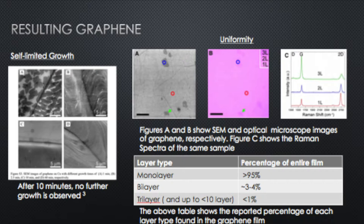After the Lee group synthesized large area graphene films using CVD, they needed to analyze the properties of the film to make sure it was up to standards compared to graphene produced by techniques like exfoliation. They examined the self-limited growth of graphene and what mechanism that implies for how graphene is actually formed. They also assessed the overall uniformity of the graphene film — generally finding that over 95% of the film produced was a uniform monolayer, with only a few specs of bilayer and trilayer graphene.